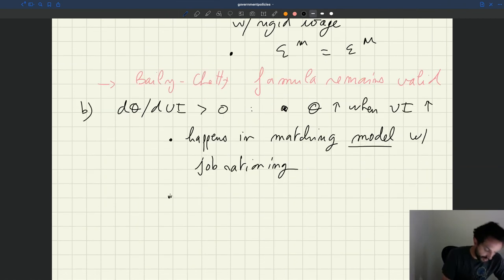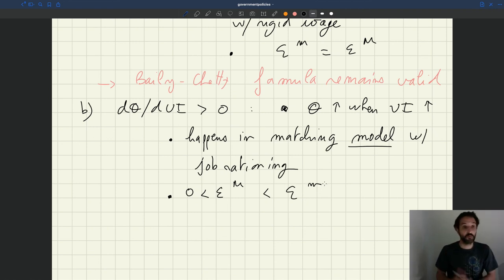And empirically, one way to identify that, when the macro-elasticity of UI, of unemployment with respect to UI, is less than the micro-elasticity, when macro-effects are dampened at the macro-level.